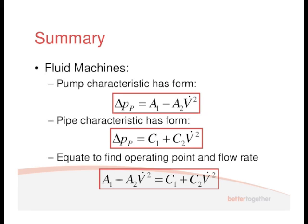Fluid machines: you get a pump characteristic and a pipe characteristic. You match them up to determine the operating point and hence the flow rate.